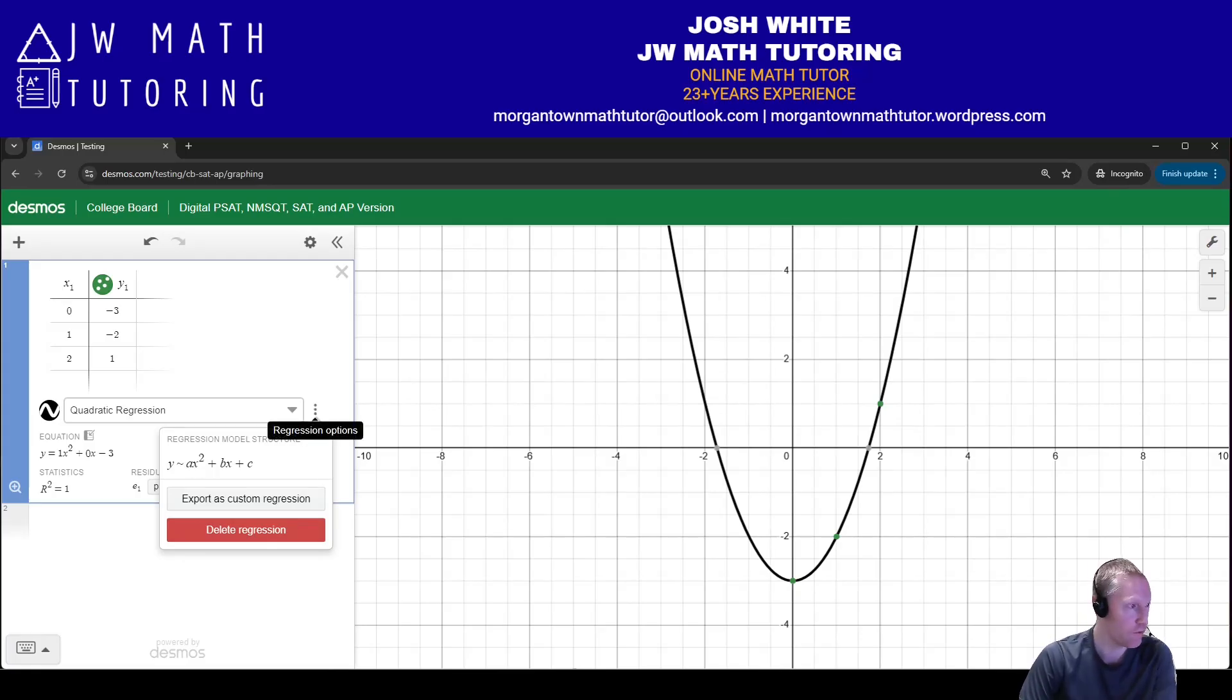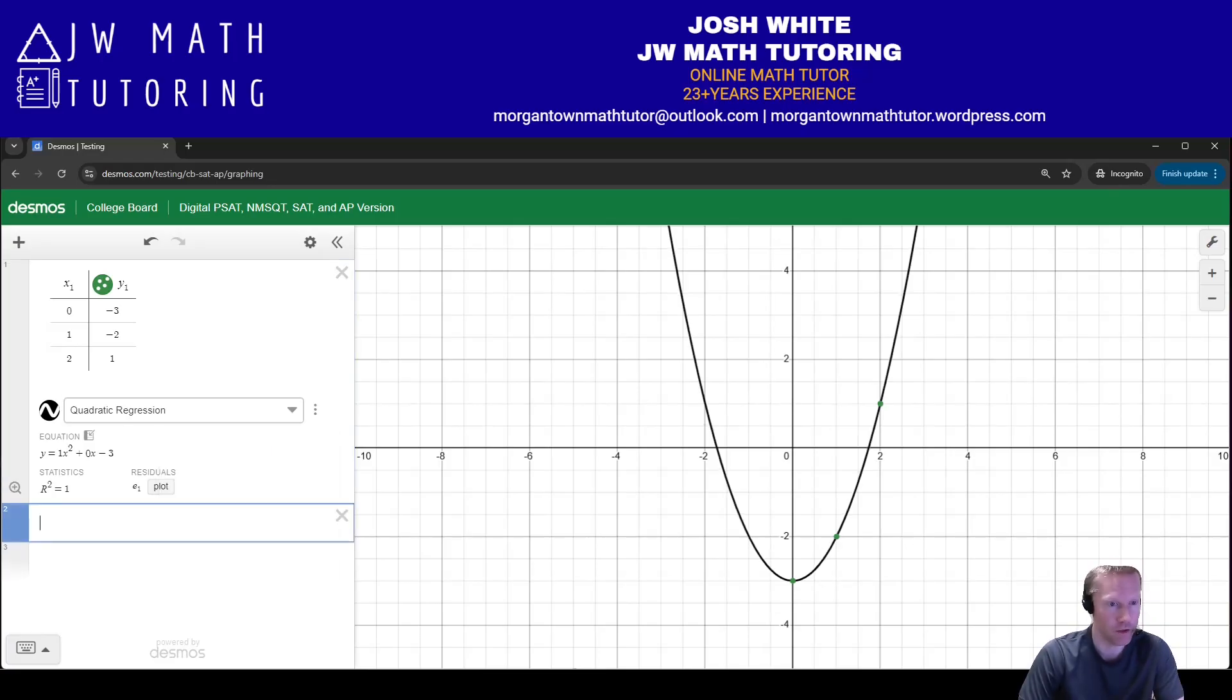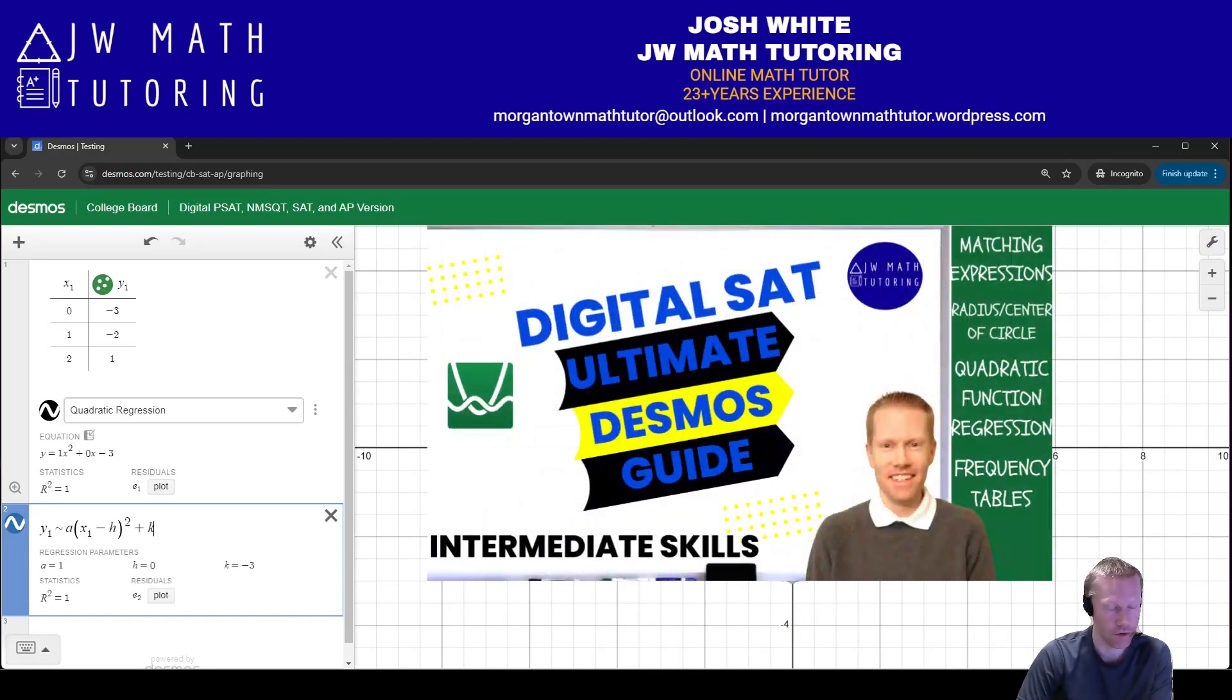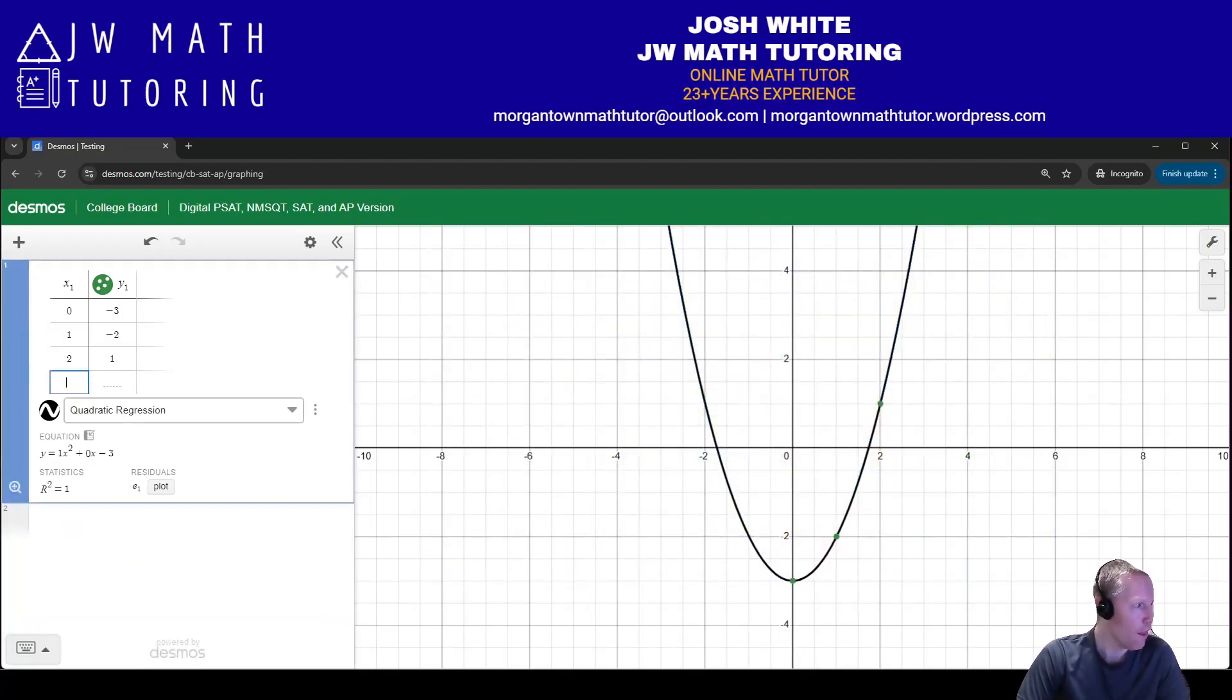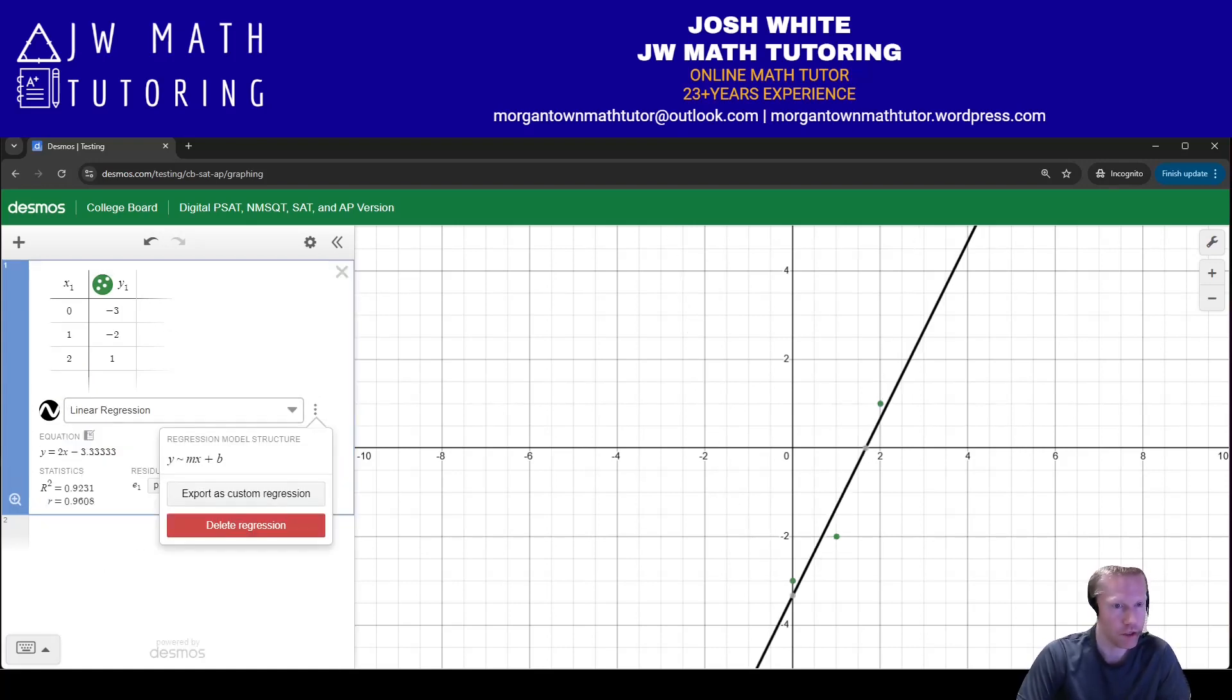So it does not do it in vertex form. If you want to do vertex form quadratic regression, you will still need to type that manually, meaning you would need to type basically this right here. Again, if you want more information on that, you can check out the intermediate skills section of my ultimate Desmos guide to digital SAT math. So that's the other thing. And like I just showed you for any of these, if you type it here, it gives you the basic structure. So for example, you go to exponential here's a times b^x.